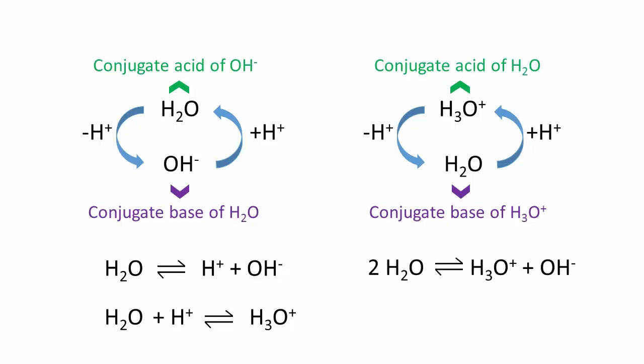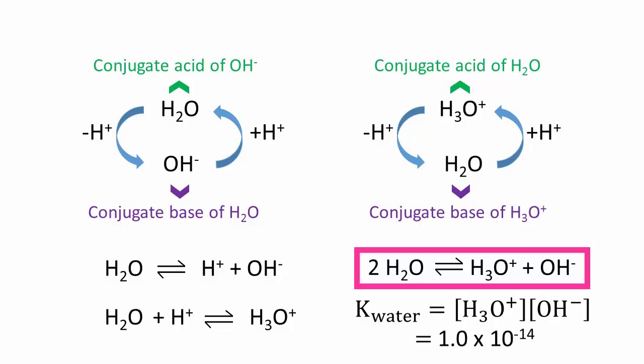The auto-ionization of two water molecules, one acting as a base and the other as an acid, to produce a hydronium cation and a hydroxide anion, is perhaps the single most important equilibrium in chemistry. At 25 degrees Celsius, its equilibrium constant is 1.0 times 10 to the negative 14.